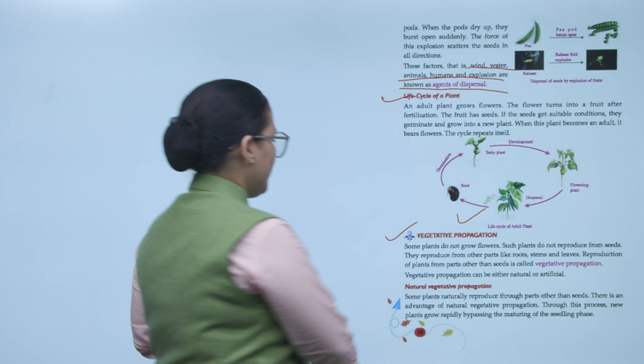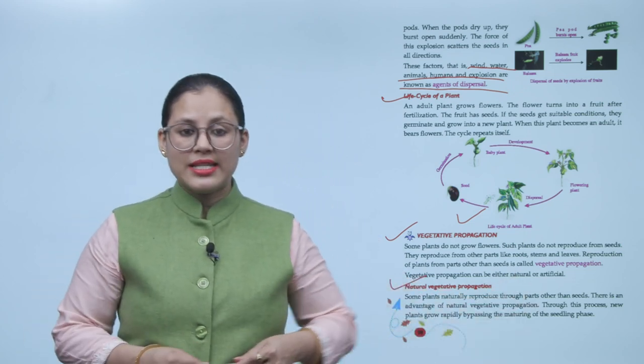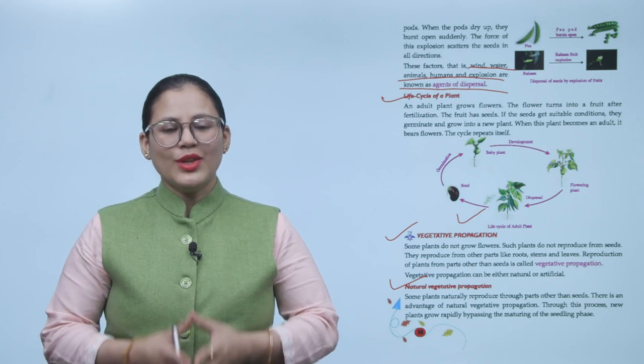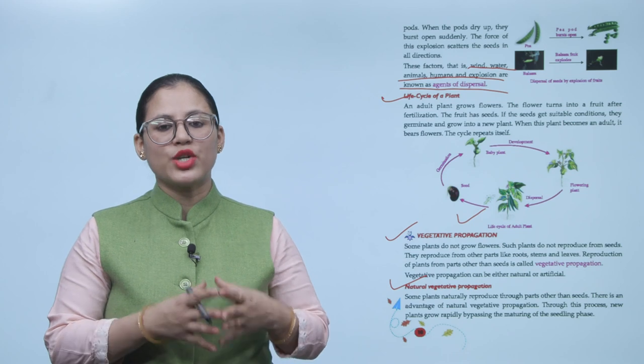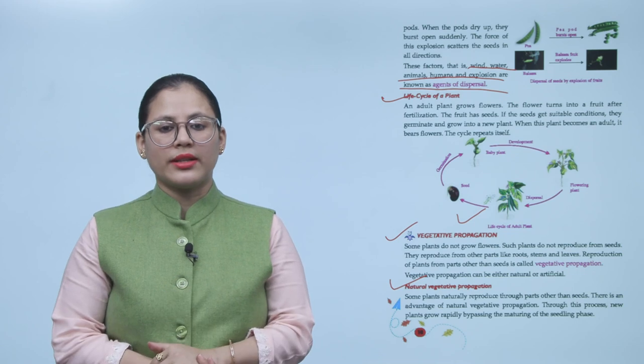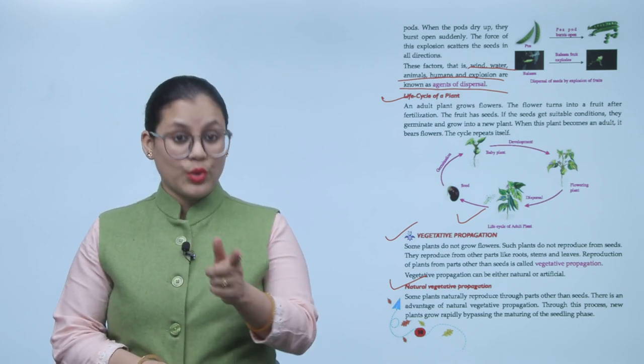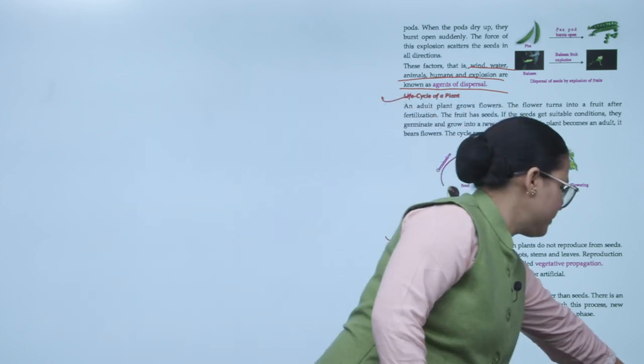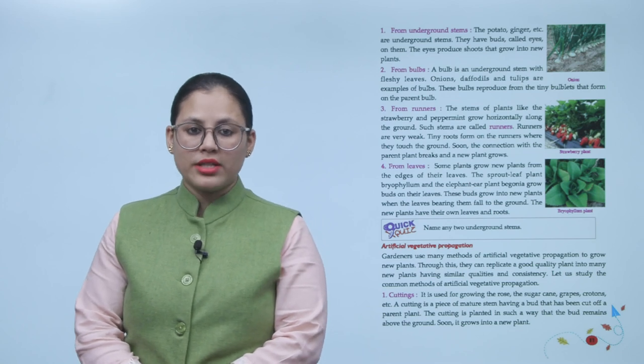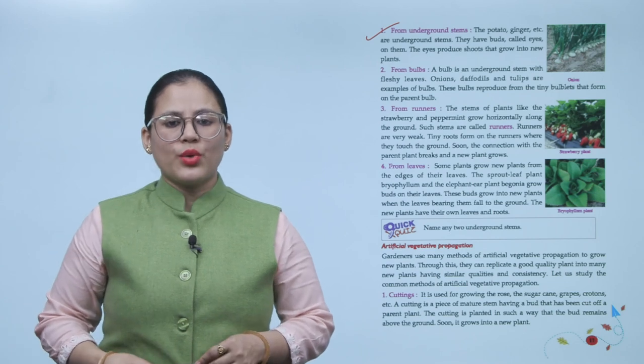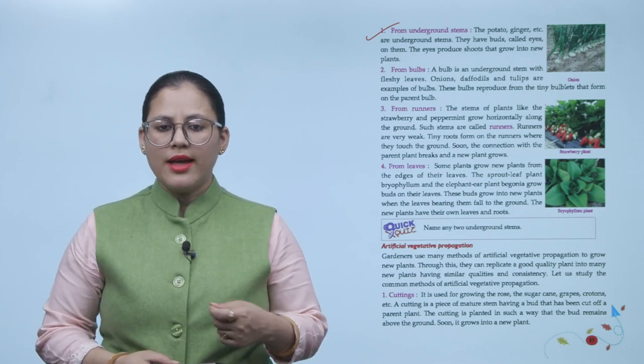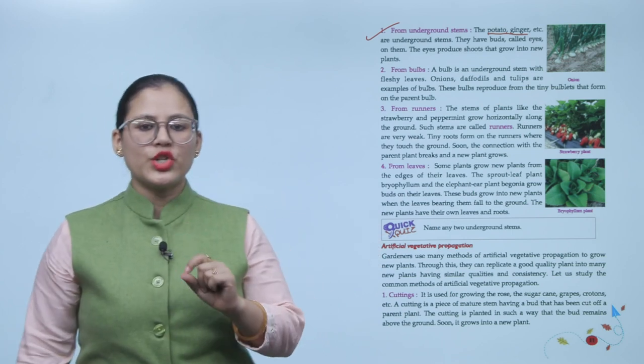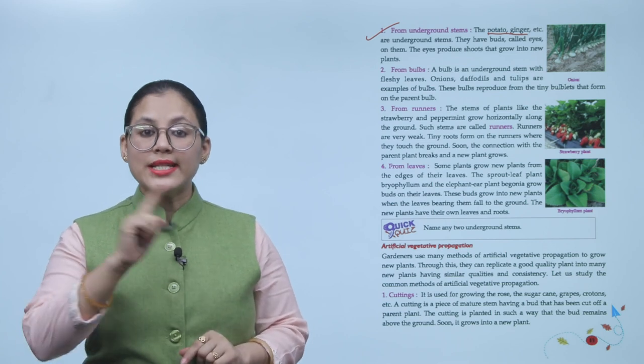Natural vegetative propagation. Some plants naturally reproduce through parts other than seeds. There is an advantage of natural vegetative propagation. Through this process, new plants grow rapidly by bypassing the maturing of the seedling phase. Number one: From underground stems. The potato, ginger, etc. are underground stems. They have buds called eyes on them. The eyes produce shoots that grow into new plants.